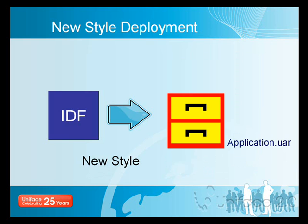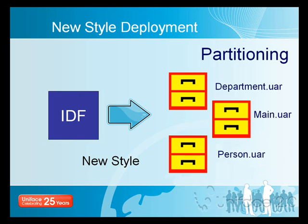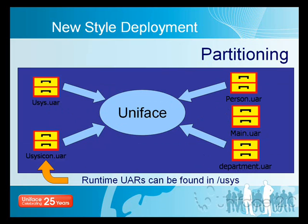At deployment time, these objects are all packaged into a UAR file and this UAR file is deployed. Unlike previous versions of Uniface, this UAR file does not have to be unpacked — the Uniface runtime can read from the UAR directly. The whole application does not have to be put into a single UAR file; it can be partitioned across multiple UAR files. Once deployed, Uniface will read both its own UAR files and your application UAR files to deliver the application.